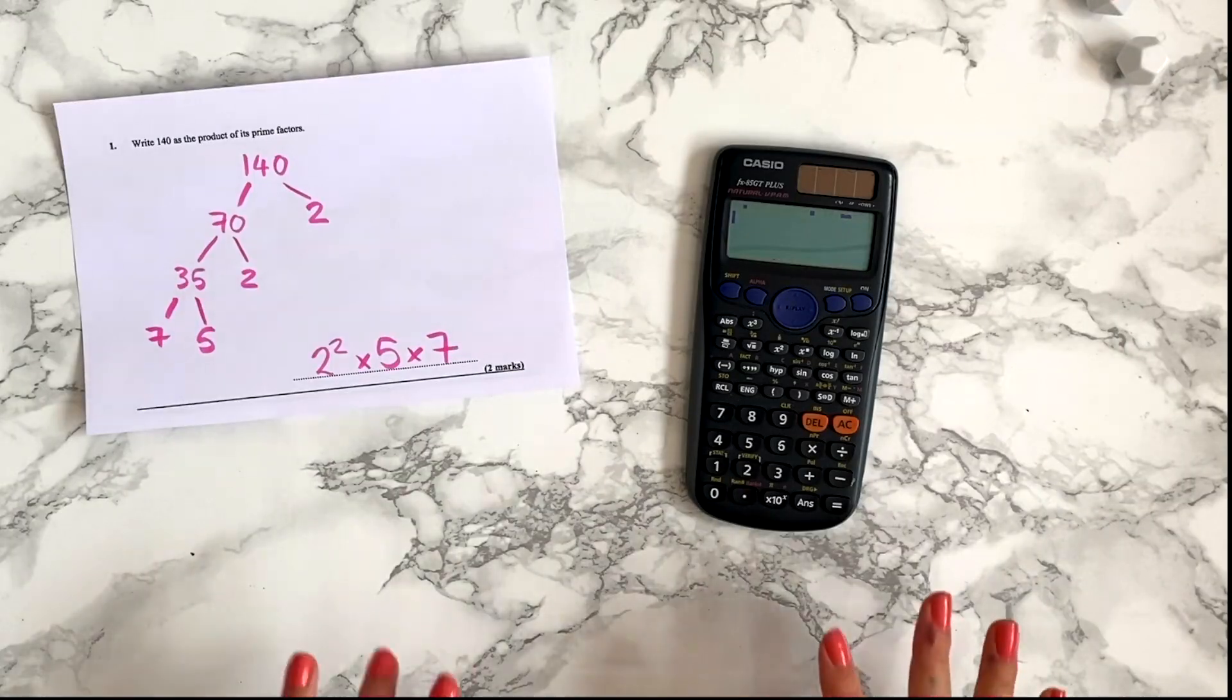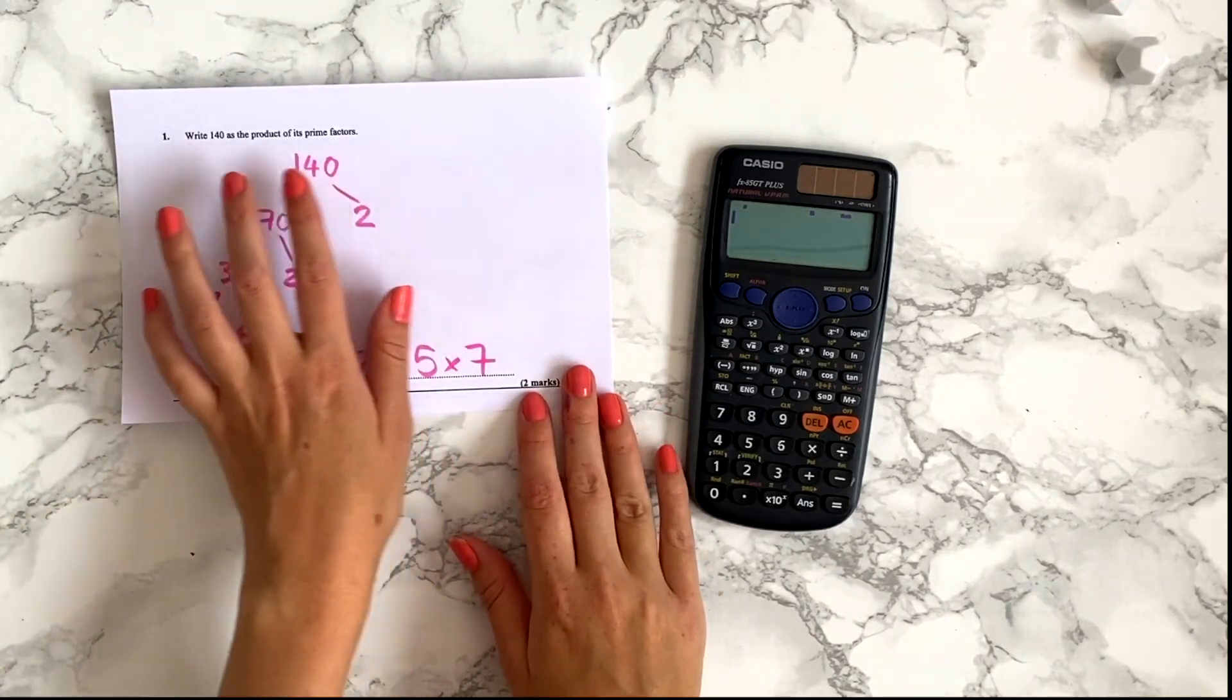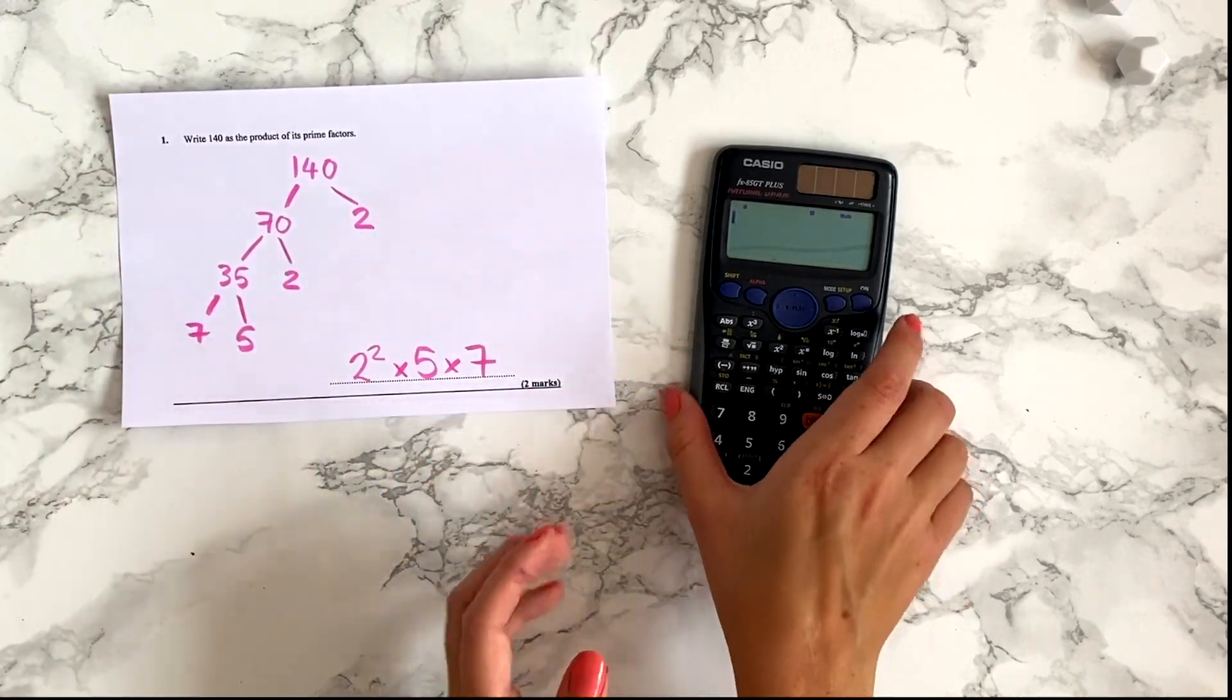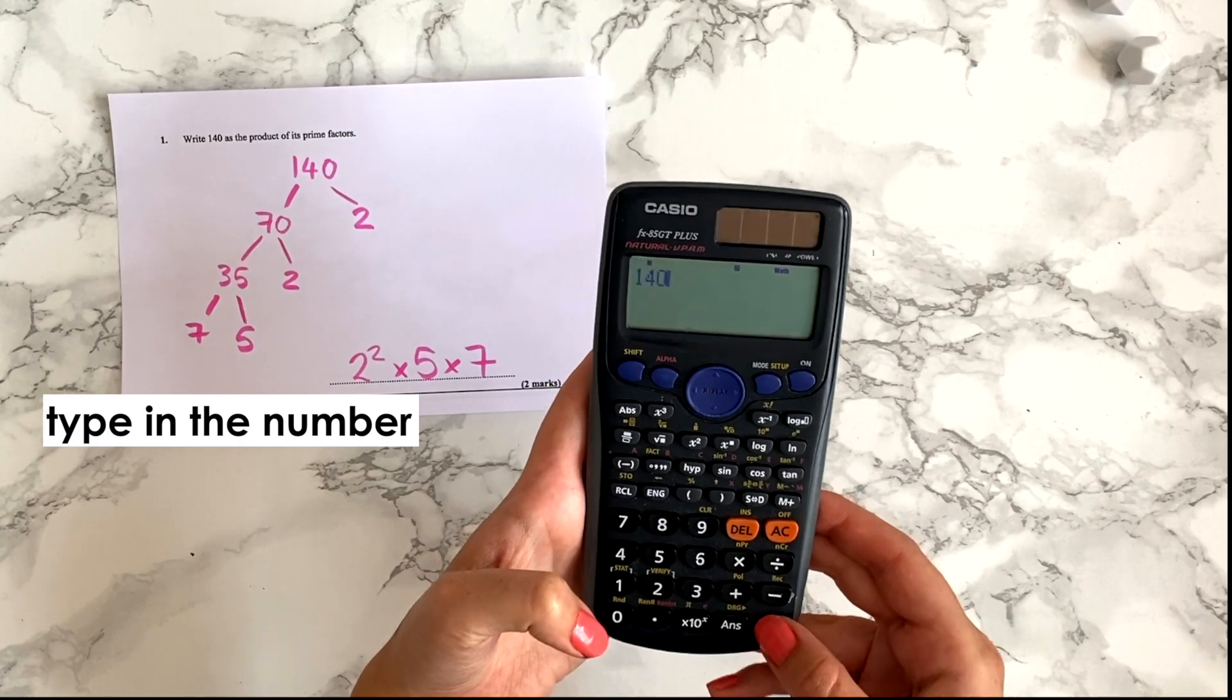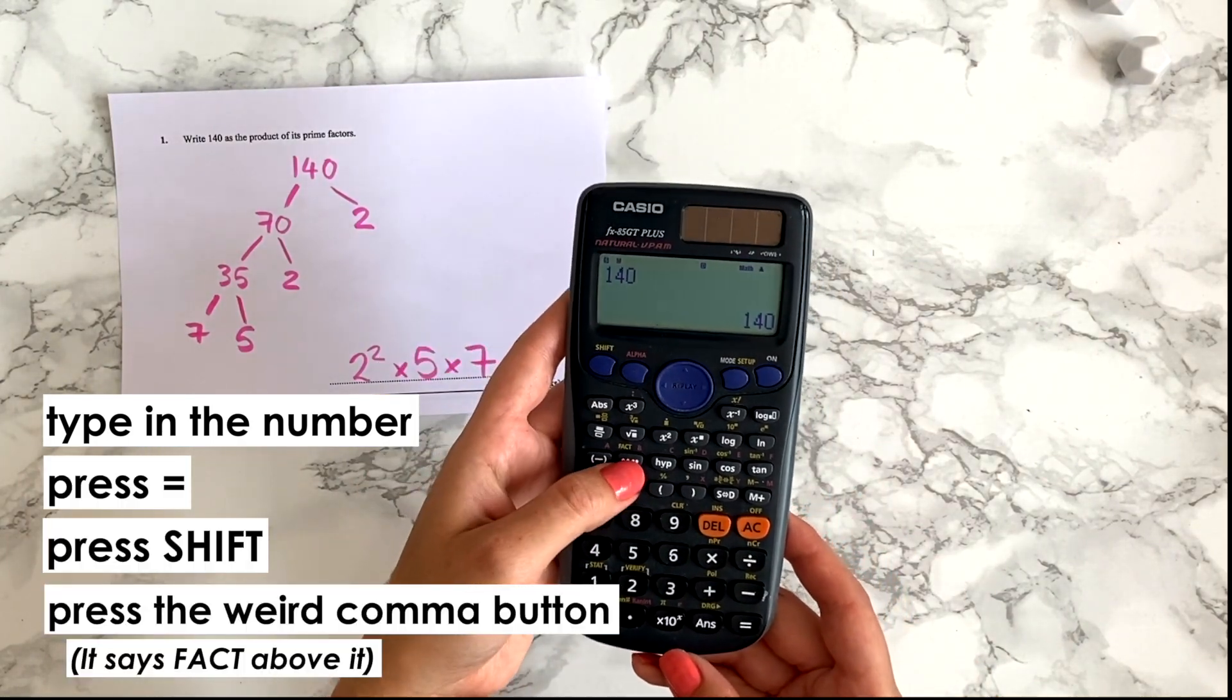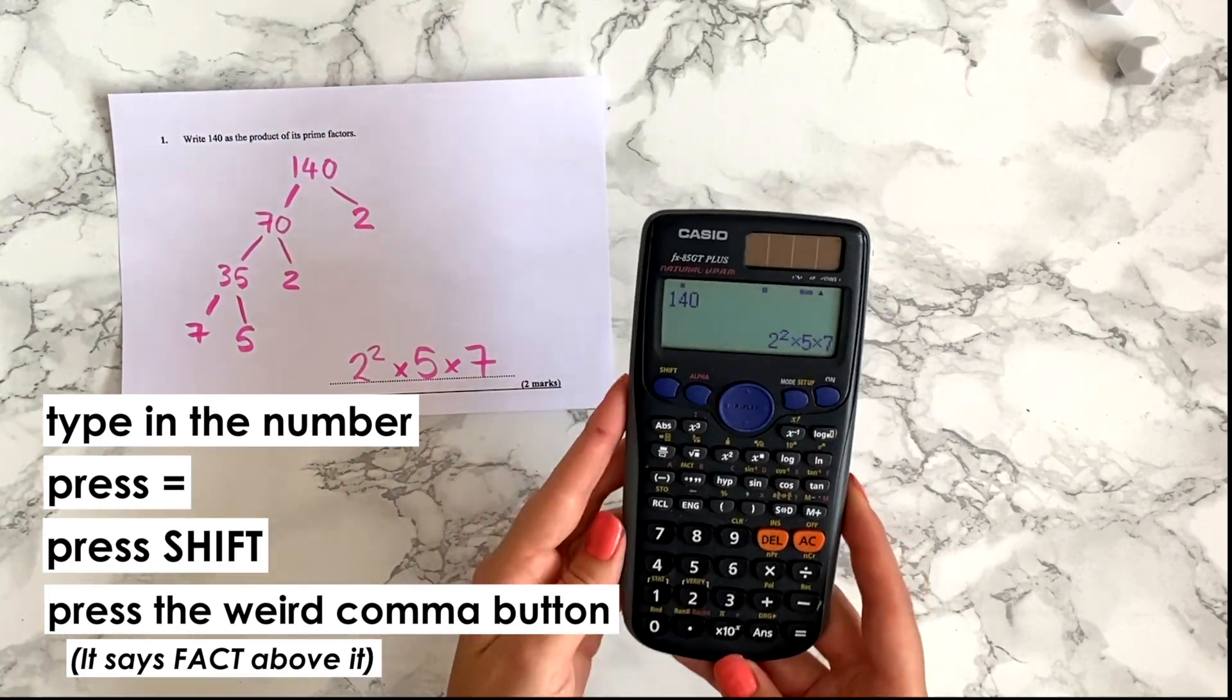So I'm literally obsessed with calculators and I think they're really underused by students. Calculators can answer a lot of questions for you. So for instance if you're doing GCSEs and say you need to find the prime factorisation of 140 you can check your answer by typing in 140 in your calculator and pressing equals and then if you press shift and in fact it tells you the prime factorisation so you can check your answer.